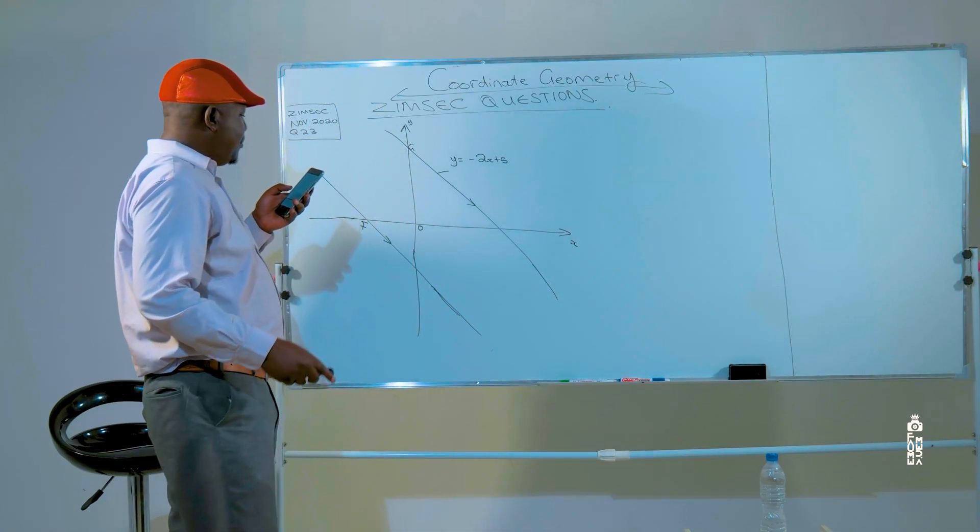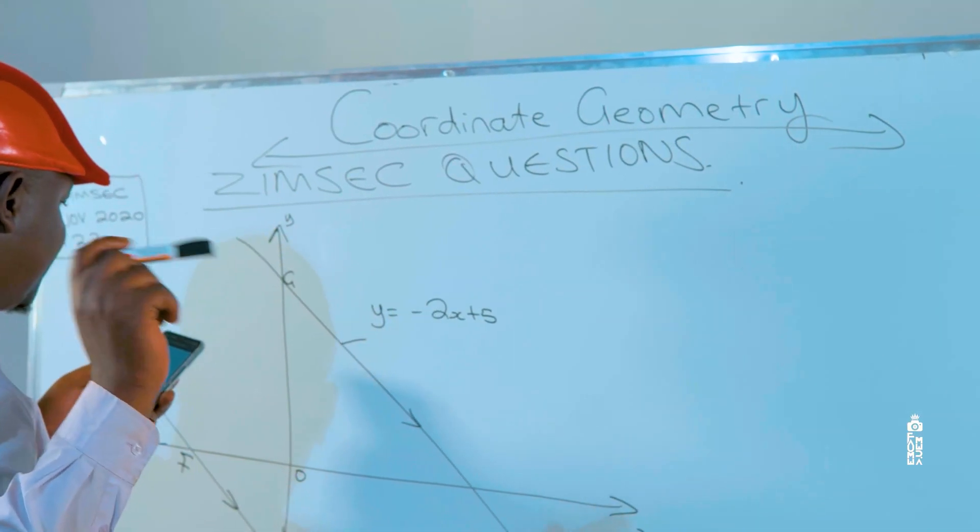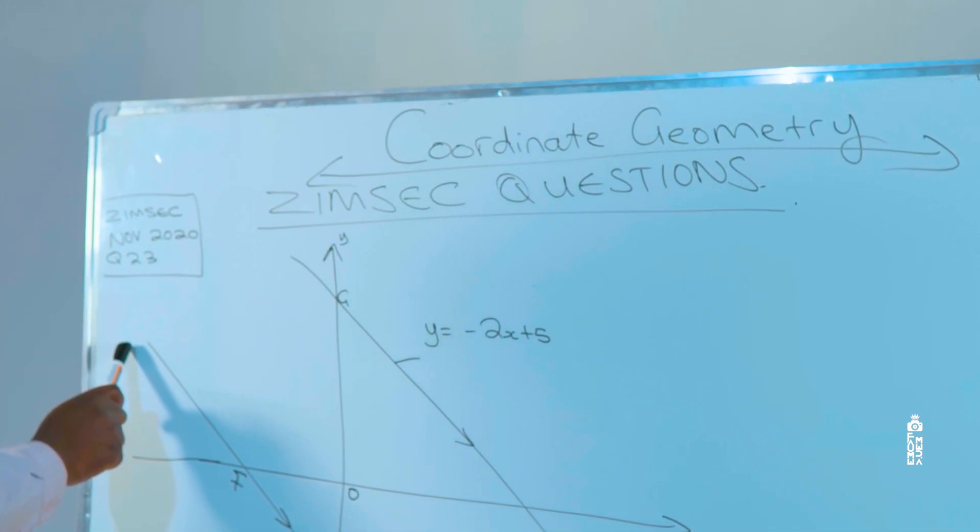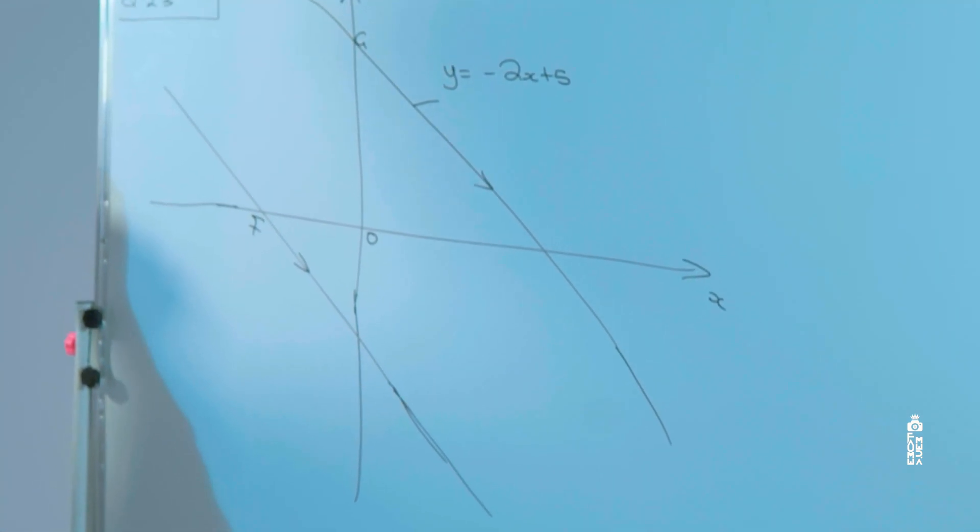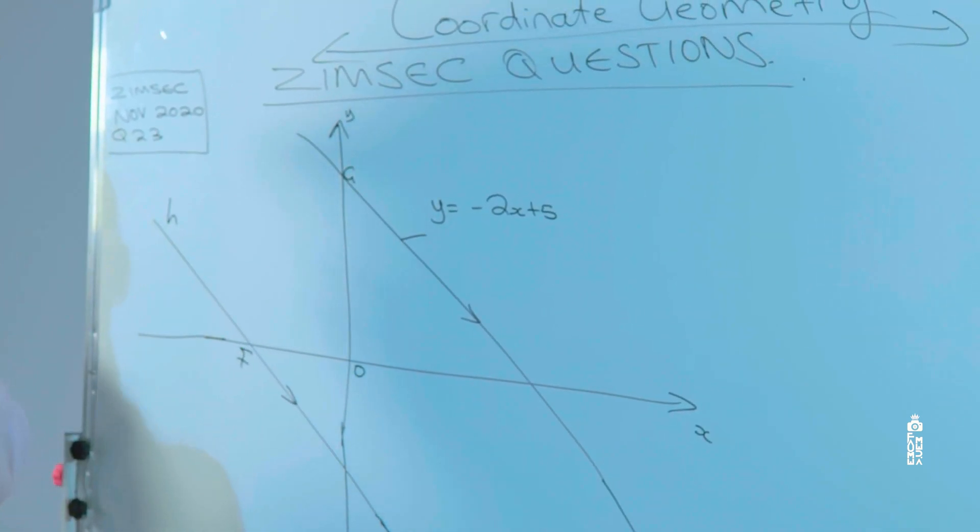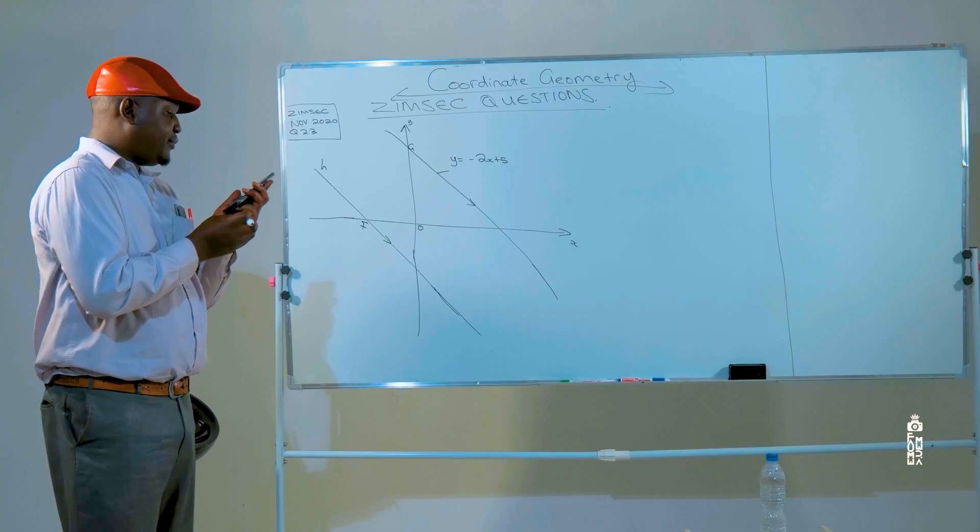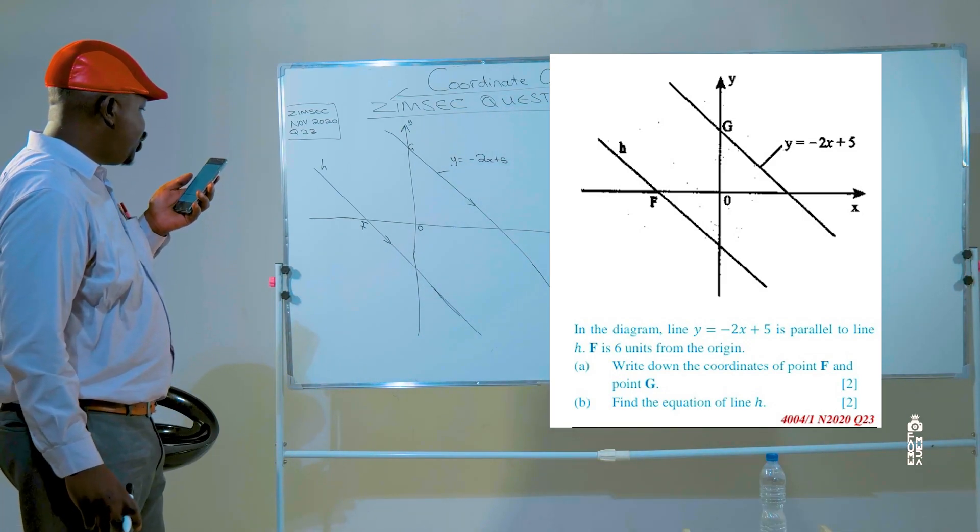In the diagram, we have a line y equals minus 2x plus 5, which is parallel to the line, sorry, it's line h. And the question goes like, write down the coordinates of point f and point g.